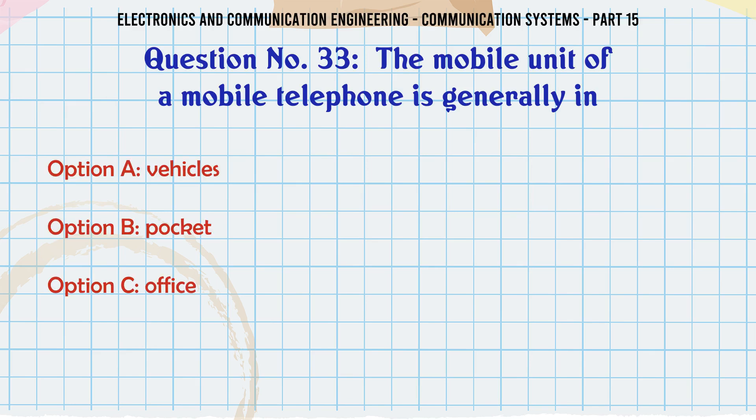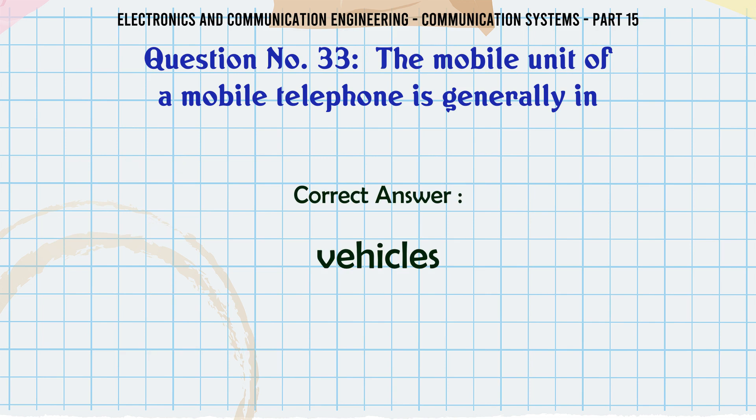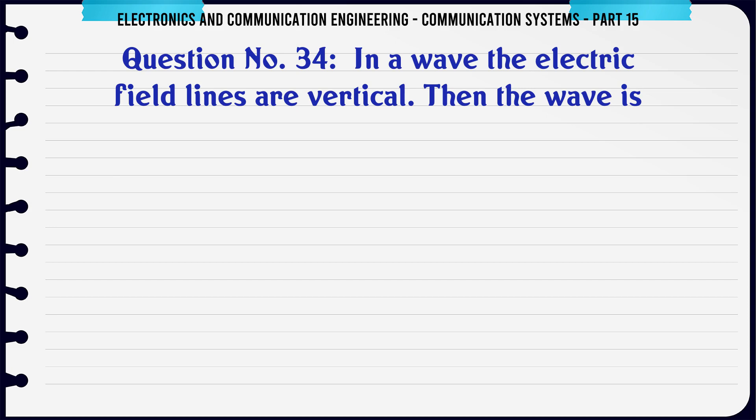The mobile unit of a mobile telephone is generally in: A vehicles, B pocket, C office, D vehicle or pocket. The correct answer is vehicles.